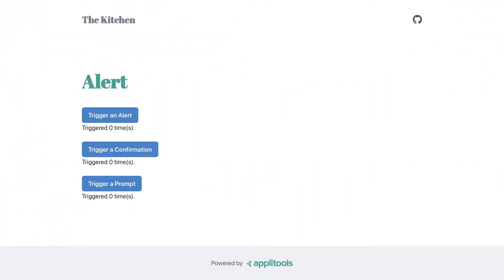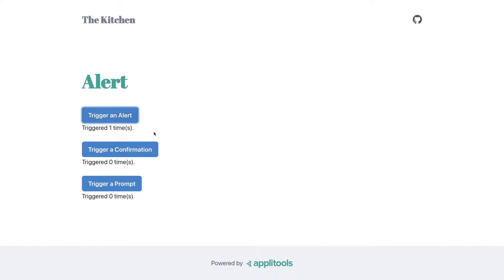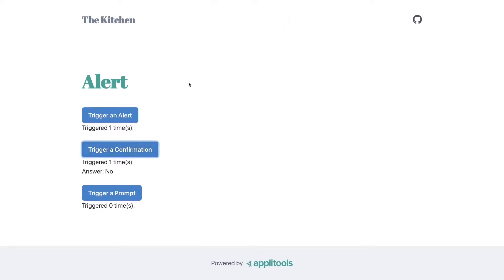The alert, confirmation, and prompt functions are a way to convey important information or ask questions to people visiting your site. If we trigger an alert it will display a message we can click OK. If we trigger a confirmation it asks a question where we can proceed or cancel. The prompt asks a question where we can type anything we want, like pizza, and hit OK.